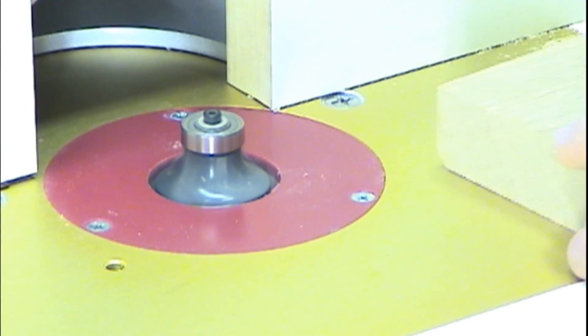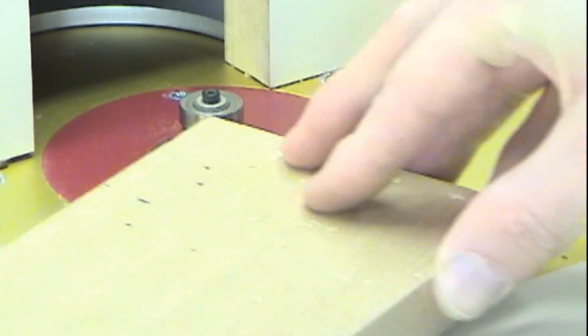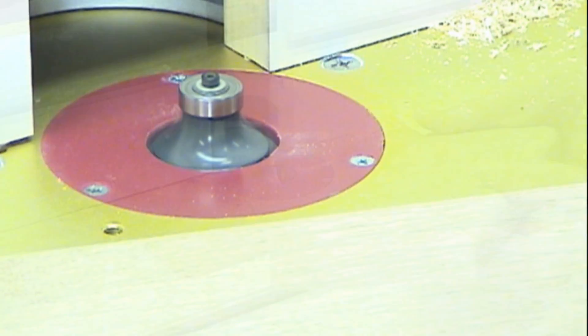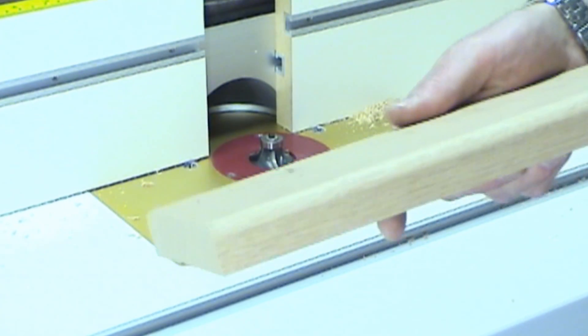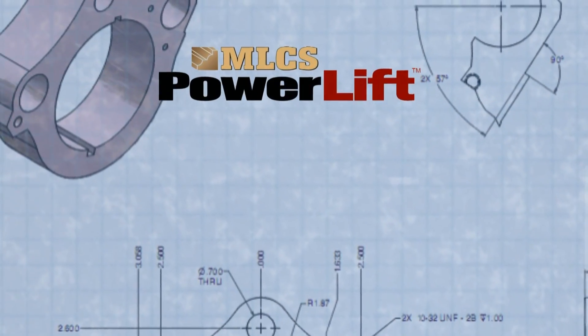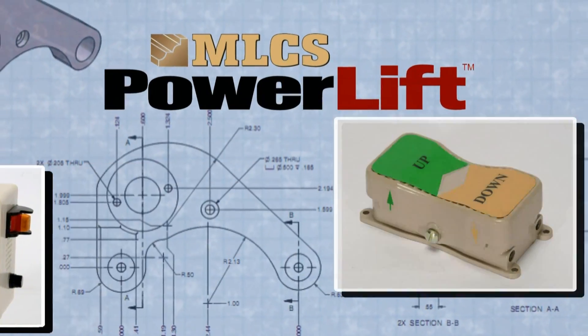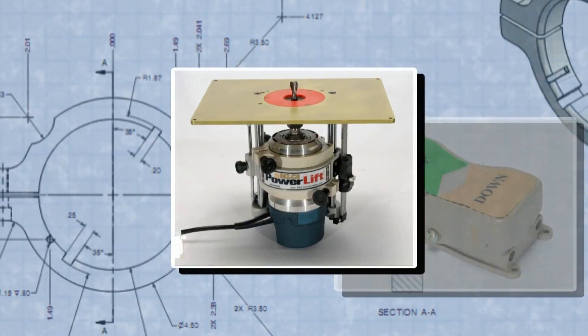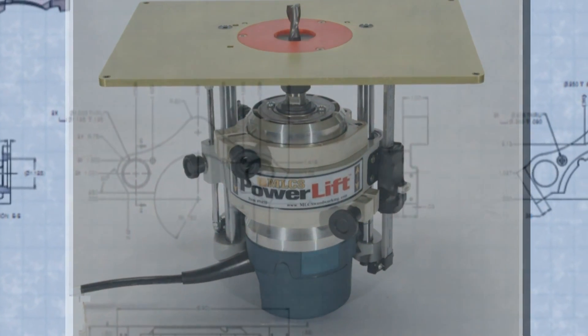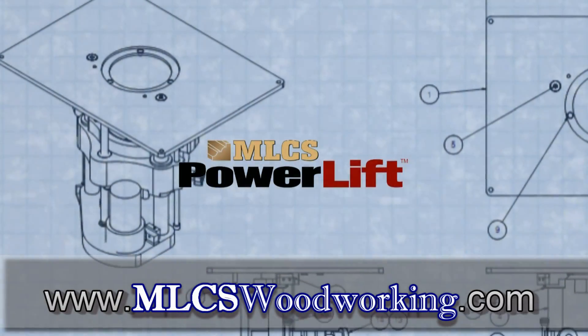Your final pass will leave a nice smooth finish on the wood, because you're just taking a small amount off. Taking incremental passes has never been so easy. The power lift is the world's first foot activated motorized router lift. It's guaranteed to change the way you work on your router table, increasing your capability, efficiency, and safety. If you'd like to find out more about the greatest revolution in table mounted routing, visit mlcswoodworking.com.